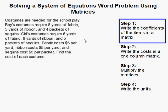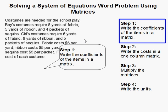So the first thing you need to do is write the coefficients of the items in a matrix. The top line is for the boys and the bottom is for the girls. So one boy costume requires 8 yards of fabric, 5 yards of ribbon, 4 packets of sequins.